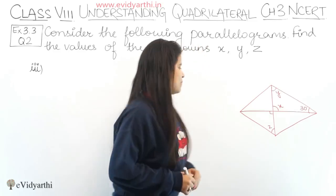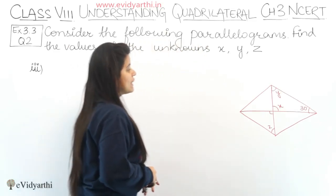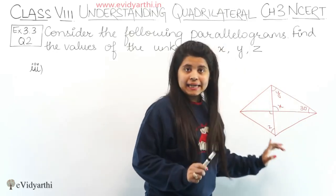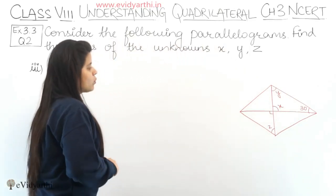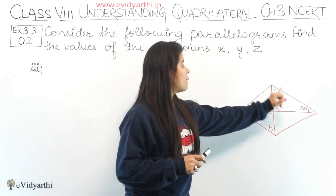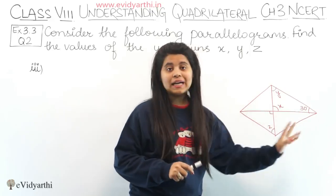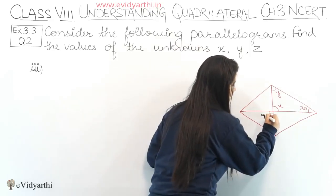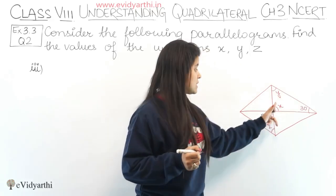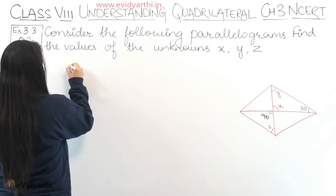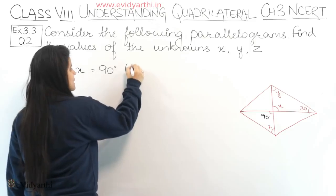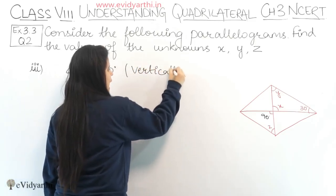Now coming to the third part. We have to find the value of x, y, and z. This is a parallelogram and these are its diagonals. We can see there is a 90° angle here. We know that the diagonals of a parallelogram are perpendicular. So if this is 90°, then x equals 90° because they are vertically opposite angles.